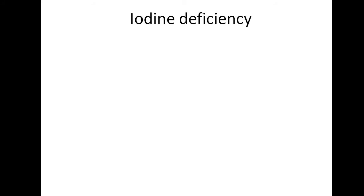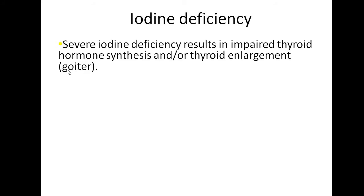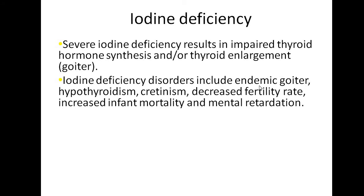Iodine deficiency occurs in regions where there is deficiency in dietary intake, or due to certain drugs or foods. Severe iodine deficiency inhibits thyroid hormone synthesis, with or without enlargement of the thyroid gland — this enlargement is referred to as goiter. Goiter means thyroid enlargement and can be due to either deficiency or excess of thyroid hormone. In sub-Himalayan regions where sea salt intake is very low, endemic goiter occurs. Consequences of iodine deficiency include hypothyroidism, cretinism, decreased fertility, increased infant mortality, and mental retardation.